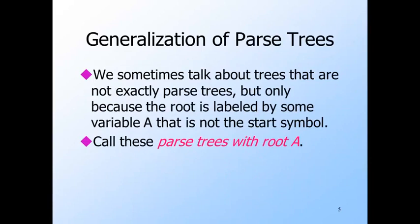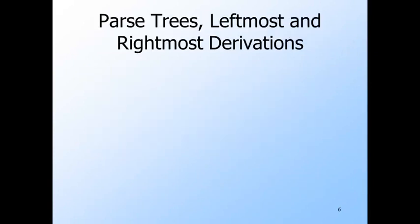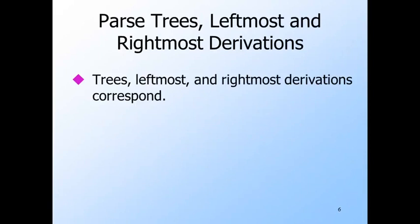In what follows, we're also going to talk about parse trees with a root A that might not be the start symbol. These trees follow all the other requirements of a parse tree: the leaves are labeled by terminals or epsilon, and an interior node with its children form a production of the grammar. We'll show how to convert parse trees to leftmost or rightmost derivations and vice versa, proving something more general by allowing any root label A and any leftmost or rightmost derivation from any variable A.